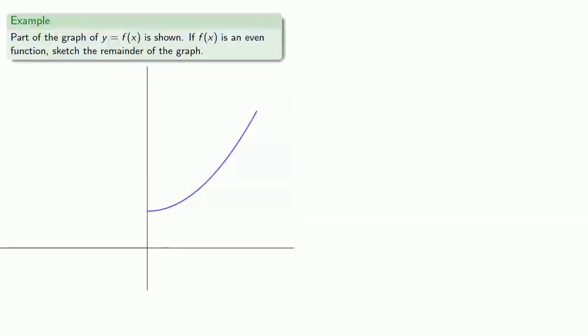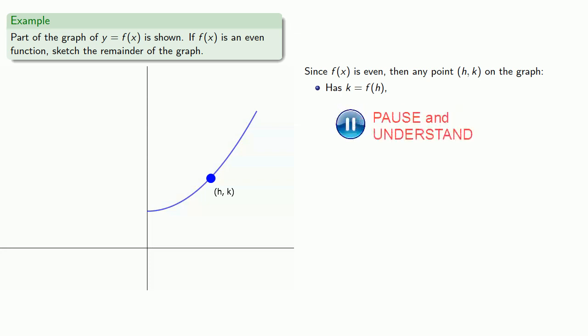So for example, if we know that part of the graph of y equals f of x is shown, if f is an even function, we can sketch the remainder of the graph. So again, since f is even, then any point (h, k) on the graph has k equal to f of h. So f of negative h is also equal to k, and so (negative h, k) is also on the graph.